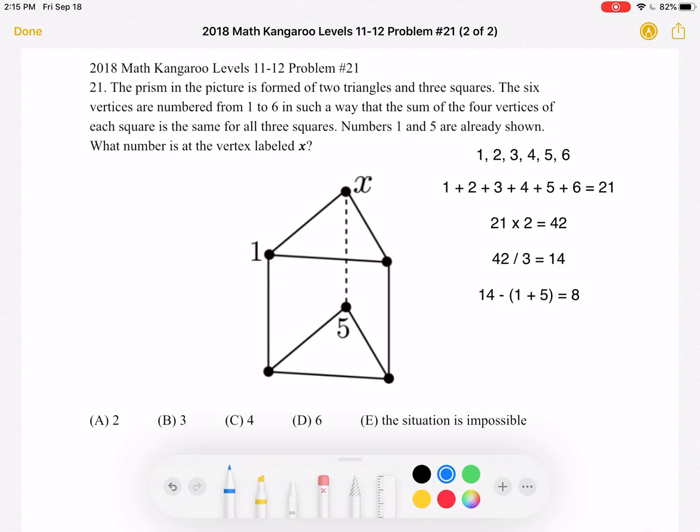To start, we know that we have six vertices that are numbered from 1 to 6 in such a way that the sum of the four vertices of each square is the same for all three squares. So we know that we're starting with these six numbers that we're going to be placing on the vertices.